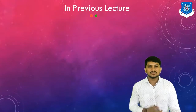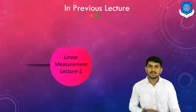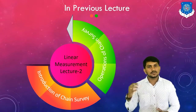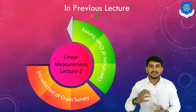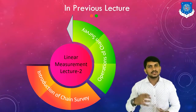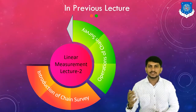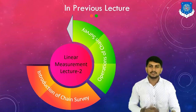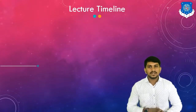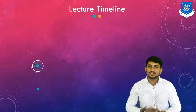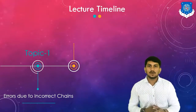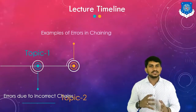In the previous lecture, lecture number two, we covered two topics: introduction of chain survey and various operations involved in chain survey like chaining, ranging, and offsetting. In today's lecture, we will cover various errors involved in chaining and a number of examples of errors in chaining.